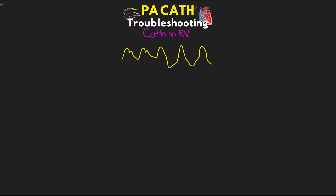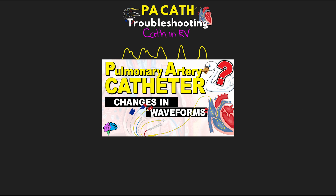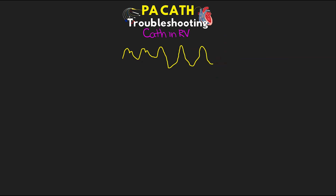The next troubleshooting scenario is if we have a catheter in the right ventricle. After you note that there is an RV waveform instead of a PA, the first thing we want to try is to inflate the balloon and see if it just naturally floats back into the pulmonary artery. In doing so, we'd want to observe the RV waveform transition with the classic step-up into our PA waveform, and then shortly after that, we should see a wedge waveform appear.